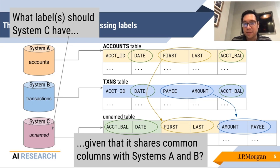More specifically, if we look at the pattern here, we see that the table in system C has a first and last, which is similar to the accounts table. It also has an amount in payee, which is similar to the transactions table, and it also has an account balance and date, which is common to both. So how can we possibly use this information to make a prediction as to whether or not this is an accounts database or a transactions database, or possibly both?